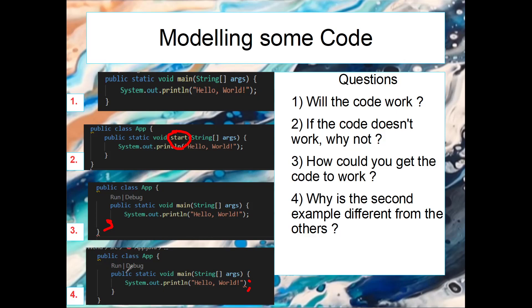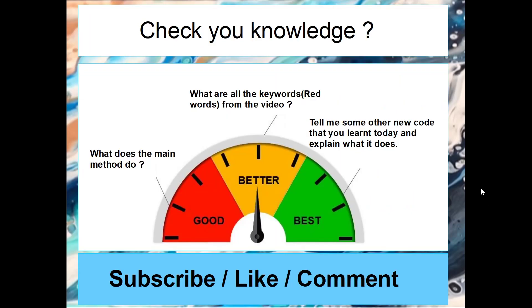In the next video, what we're going to be doing is we're going to be looking a little bit more about this main signature and we're going to be understanding what each of these words do and what do they mean. However, for this video, what I would like you to do is have a think about how well you got the knowledge from this. So can you answer this? What does the main method do? What's the point of it?